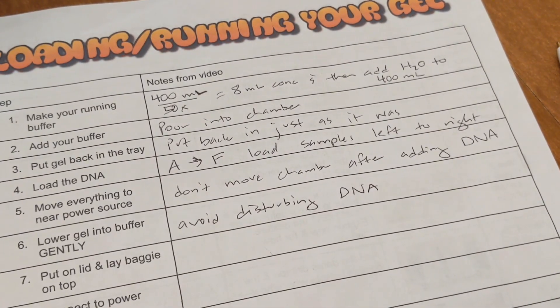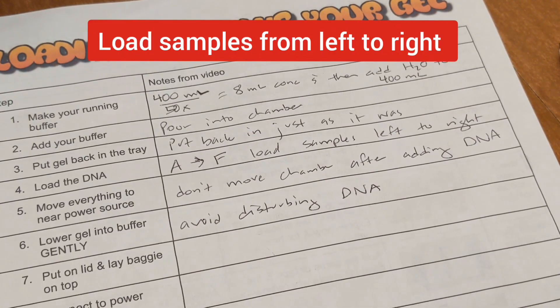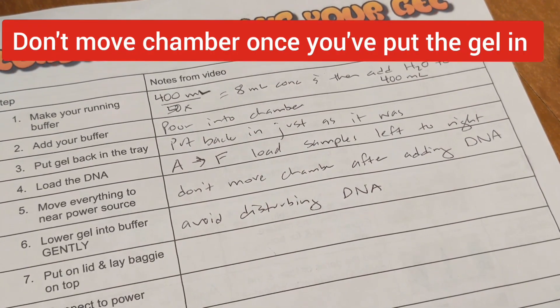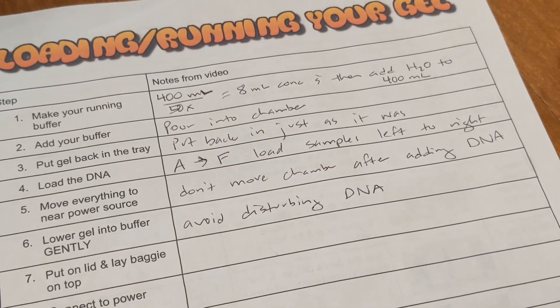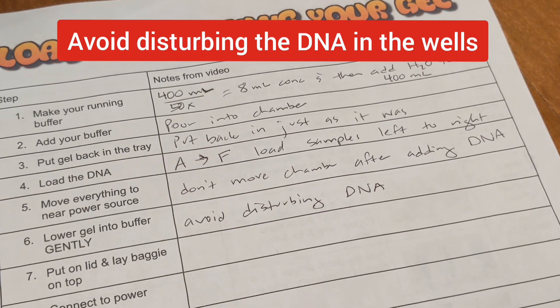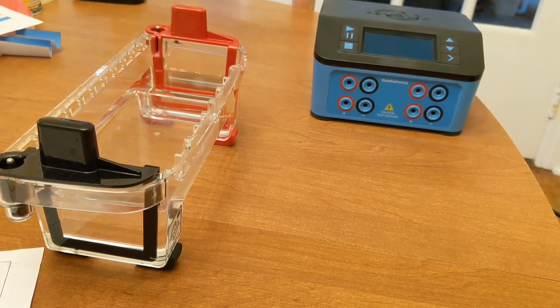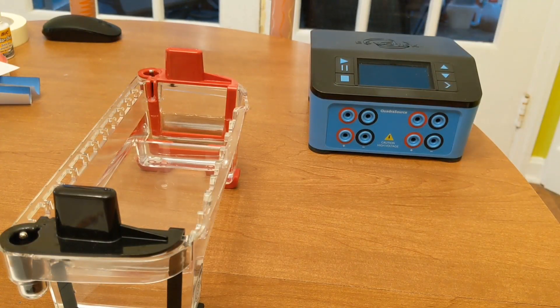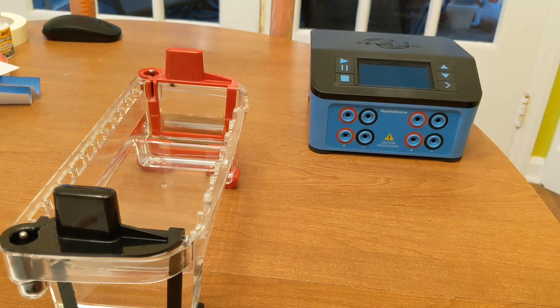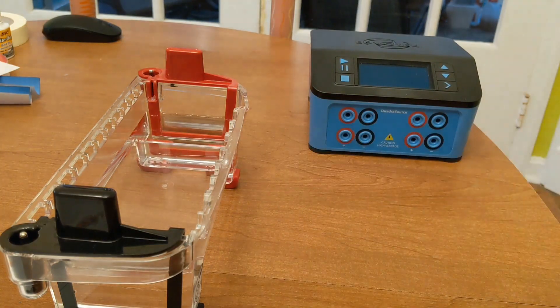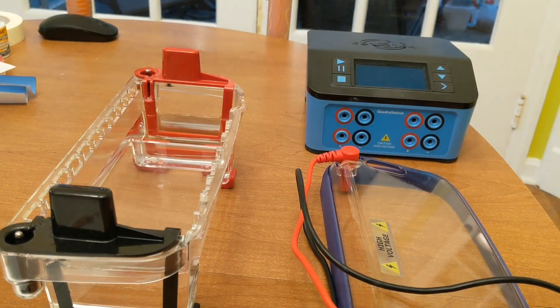So you load your DNA from left to right, your samples. Mine were A to F, so left to right. And then you don't want to move your chamber after adding the gel, putting it down in the chamber. So we're going to move toward the power source and we're going to gently lower the gel into the buffer. We don't want to disturb the DNA. Your power source is what will provide electricity so that the DNA can move. So I'm using Edvotech's Quadrasource. You can connect four electrophoresis chambers to this one power source. And you can see I've set my chamber right next to it, but you want to be close enough that you don't have to move this chamber once you put your DNA down in.